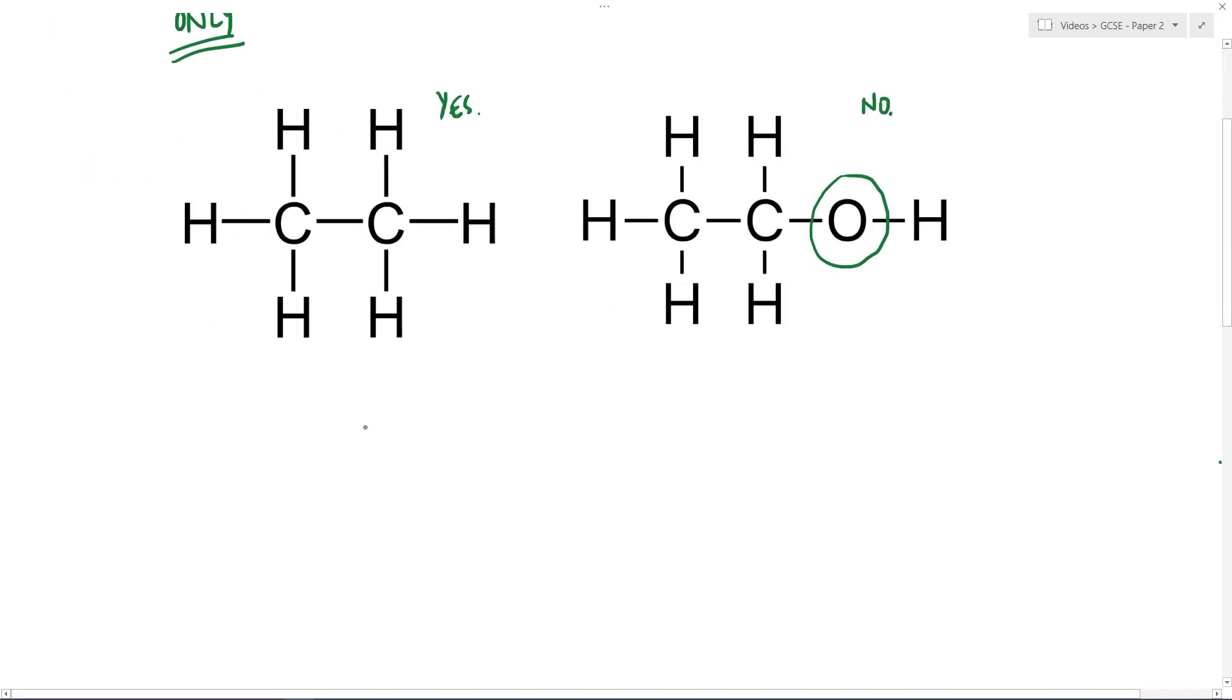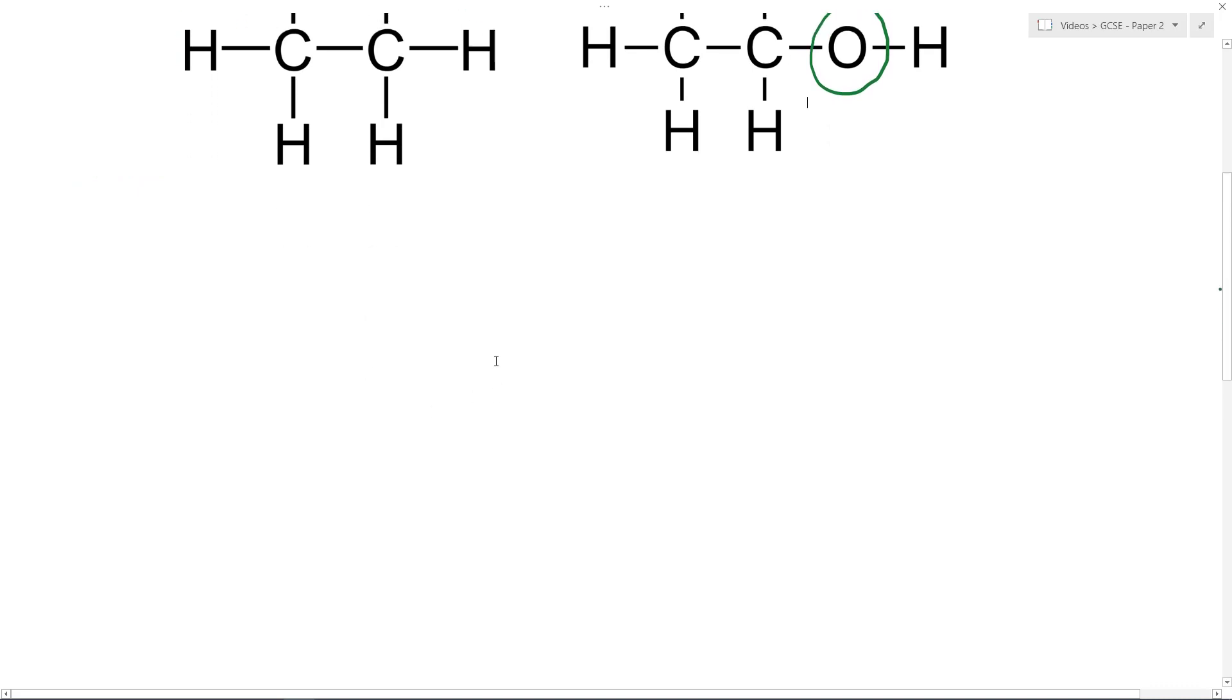So, types of hydrocarbons. Well, there's a particular group of chemicals, a family of chemicals which are hydrocarbons and these are called the alkanes. So alkanes are hydrocarbons. They are specifically saturated hydrocarbons and we've already looked at the definition of what the term hydrocarbon means, containing only hydrogen and carbon.